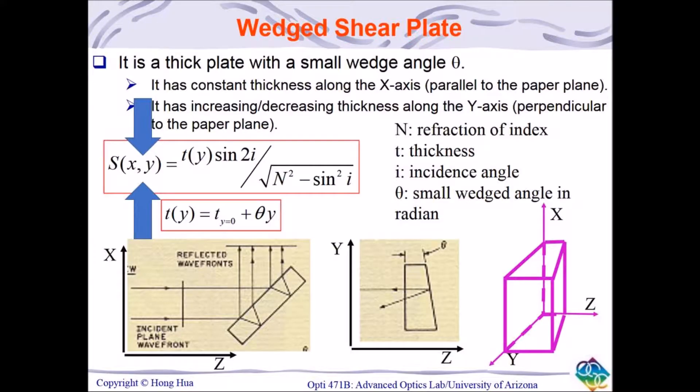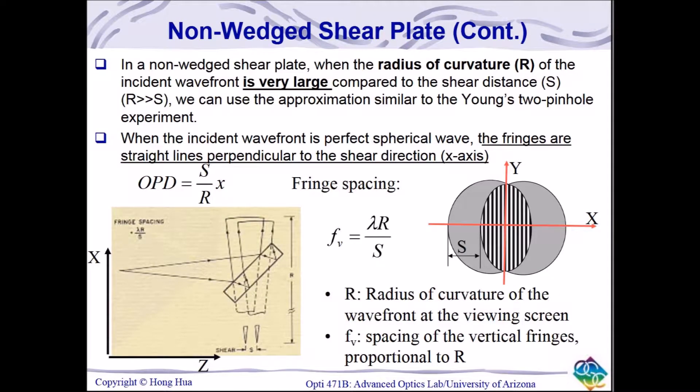Wedged shear plates introduce inconsistency in the X and Y axes. An incident plane wave on a wedged shear plate creates a straight fringe pattern along the horizontal axis. This pattern is what we used in previous labs to collimate light.